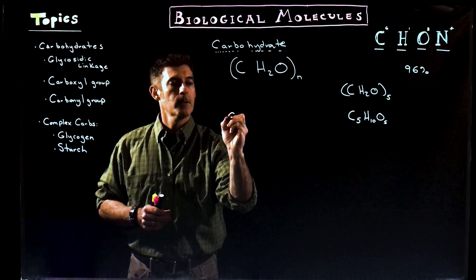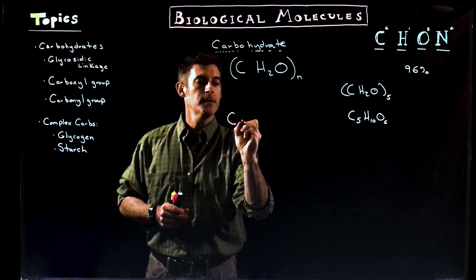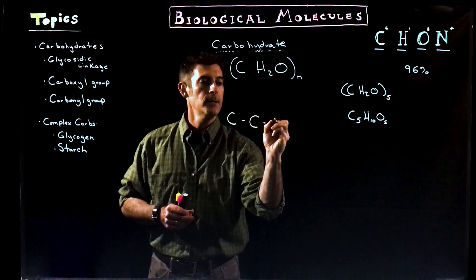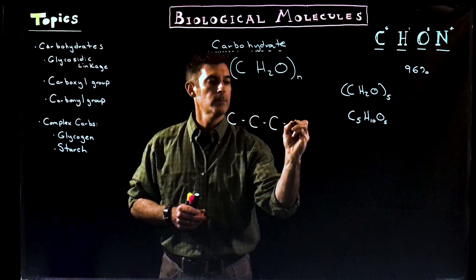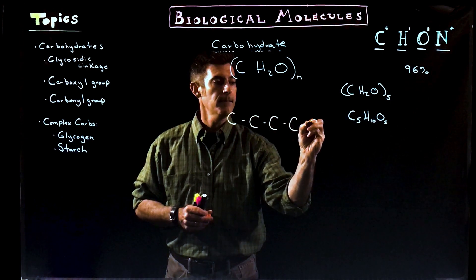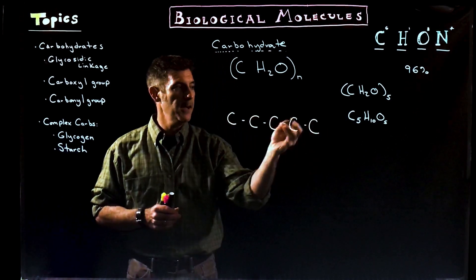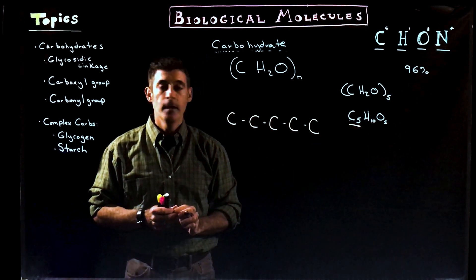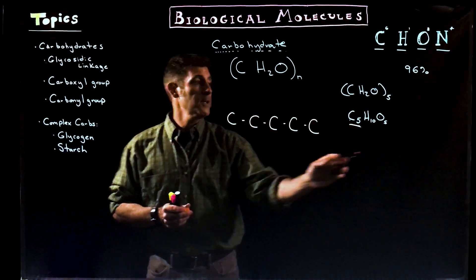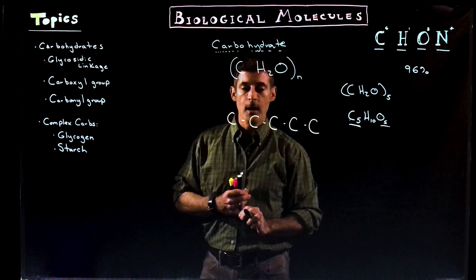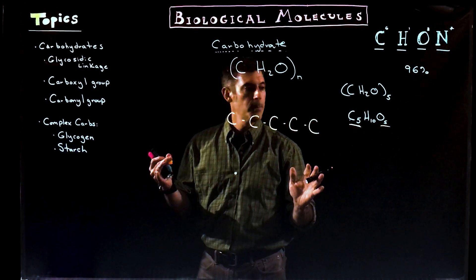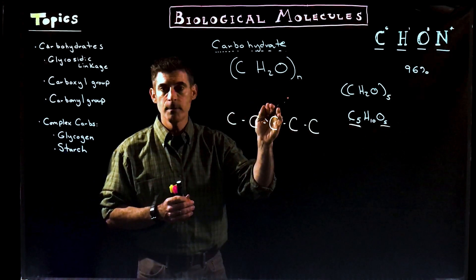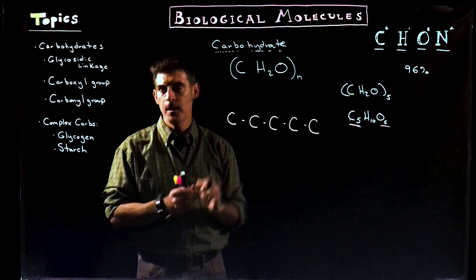So carbons: 1, and we're going to link them together — 2, 3, 4, and 5. So we've got 5 carbons. Now we said a carbohydrate is going to have an equal number of oxygens, so one question would be: where do we put them? That is going to be something that determines the specific carbohydrate you have.